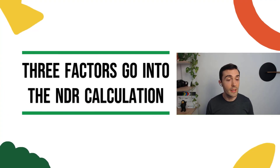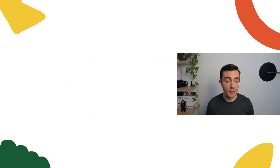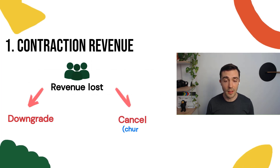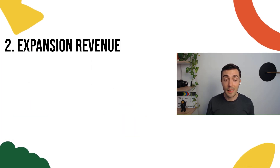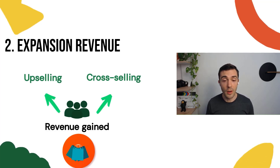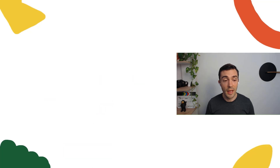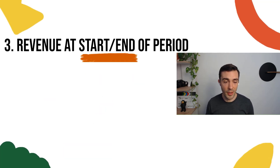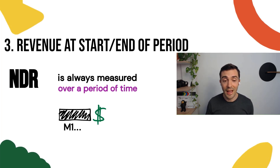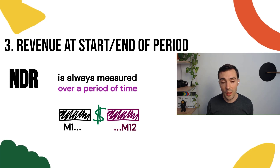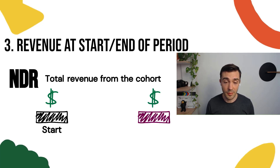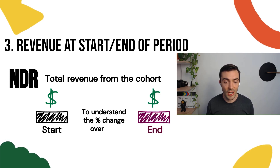So there are only three factors that go into the net dollar retention calculation. The first is contraction revenue — revenue that we lost from customers either downgrading or canceling their plans. The second is expansion revenue — revenue that we gain from either upselling or cross-selling different products to our existing customer base. And the third is revenue at the start and the end of the period, which is usually a 12-month period of time.